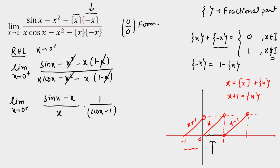This involves the standard limit (1 − cos θ)/θ² → 1/2 as θ → 0. I multiply and divide by x² in the appropriate places, making the denominator term x³. The standard limit gives −1/2, which goes to the numerator and becomes 2. So we now need to evaluate [sin(x) − x]/x³ using the sine expansion.